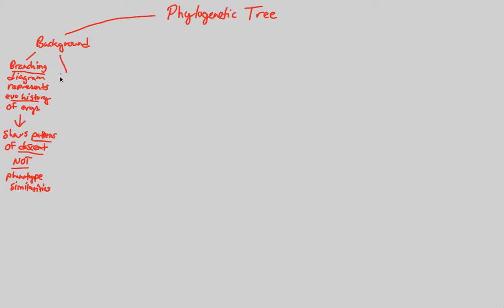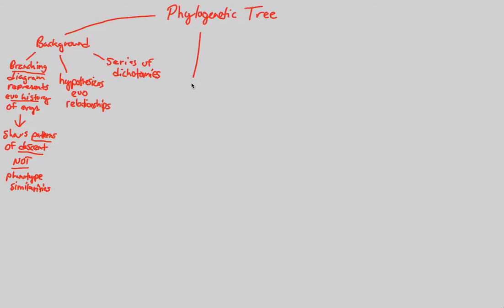In addition, what we are doing is a bunch of hypothesizing. This tree overall hypothesizes evolutionary relationships. It takes an educated, well-studied guess as to how things diverged from one another, how different organisms became different organisms, and how species became different species. It's a powerful tool that represents itself as a series of what we call dichotomies — a fancy way of saying splitting events or branching-off events. We'll get into that more when we look at the actual components of a phylogenetic tree.